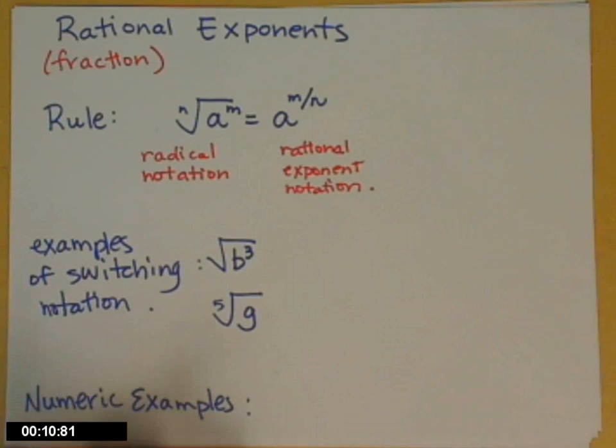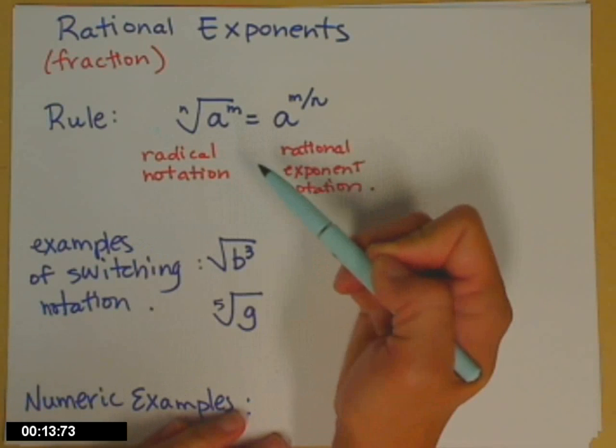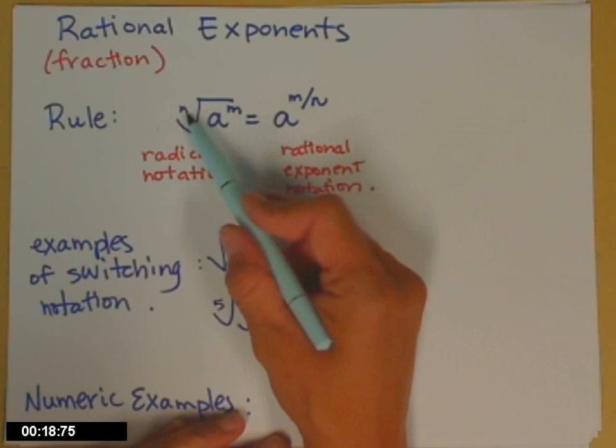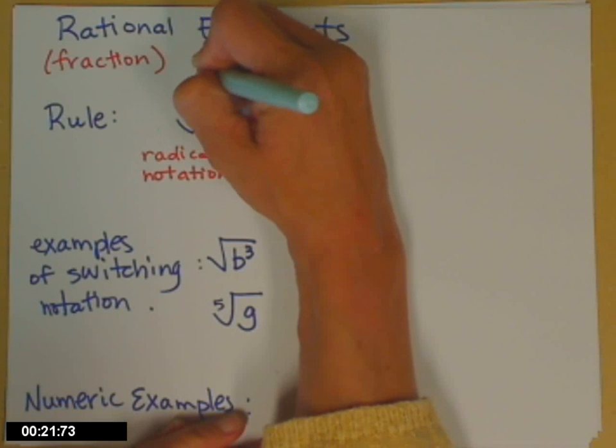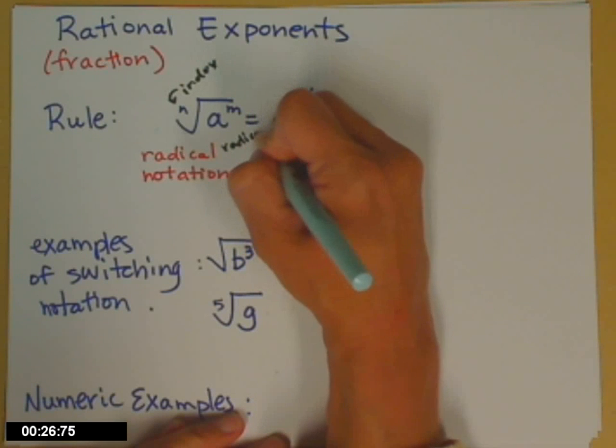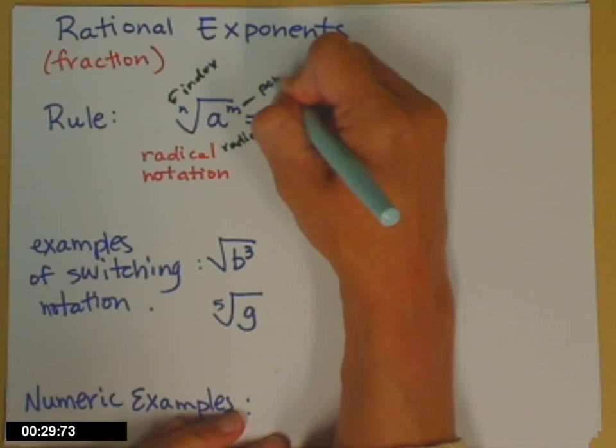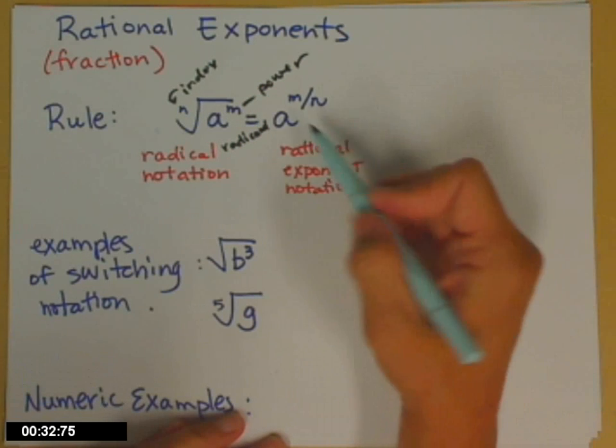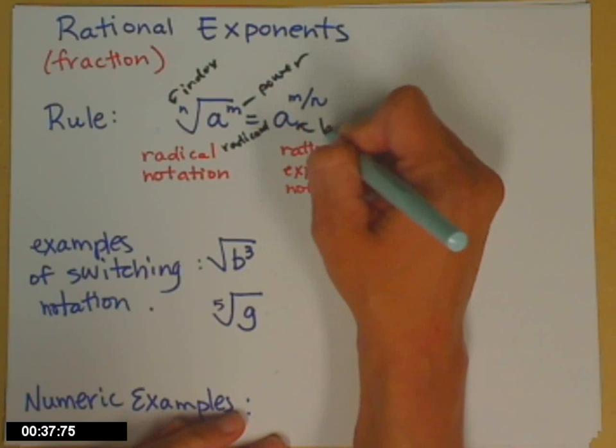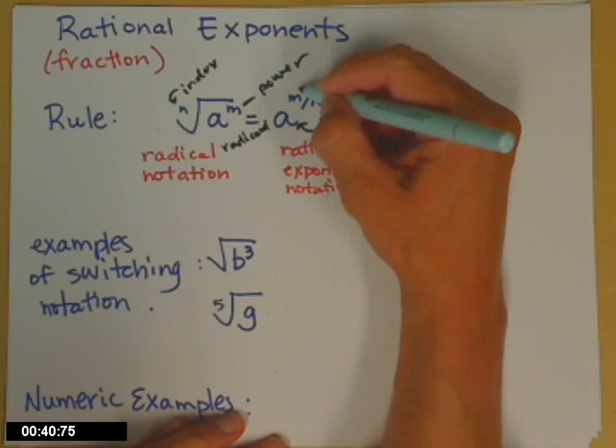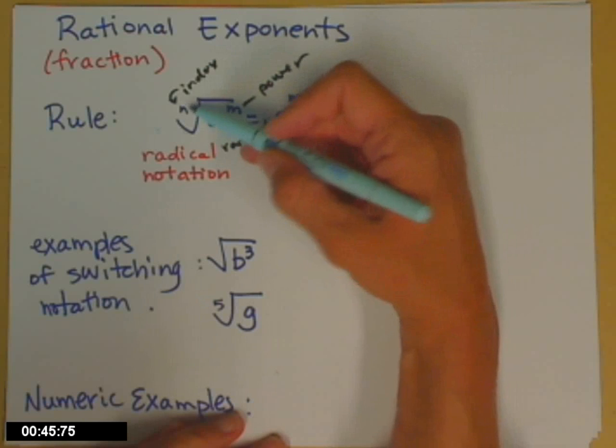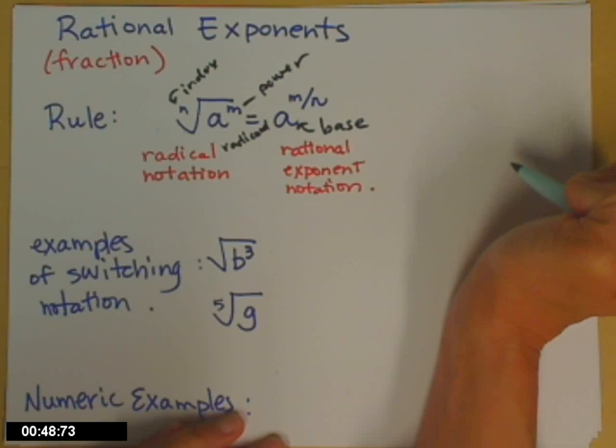So the rule is, if I have the nth root of a to the m, this is the radical notation, I have the radical symbol. n is my index, a is the radicand, and m is the power. I can rewrite that with a rational exponent. The radicand becomes the base. The power becomes the numerator of the rational exponent, and the index becomes the denominator of that fractional exponent.